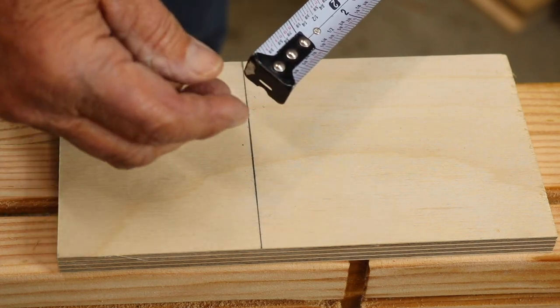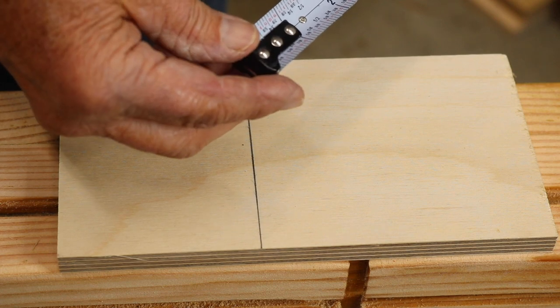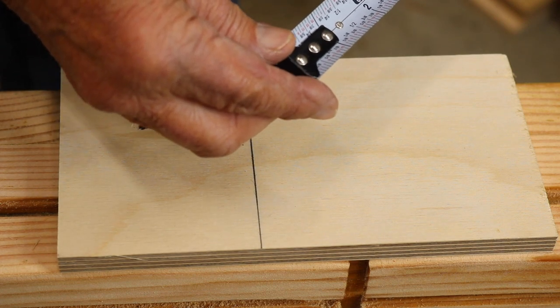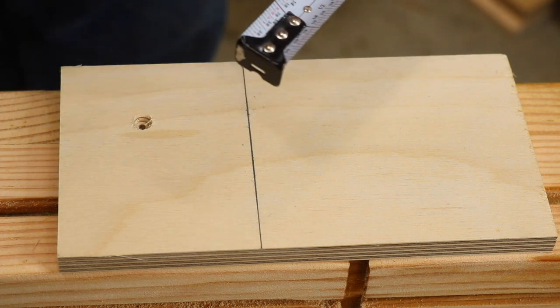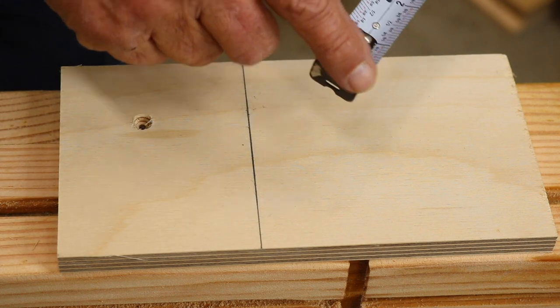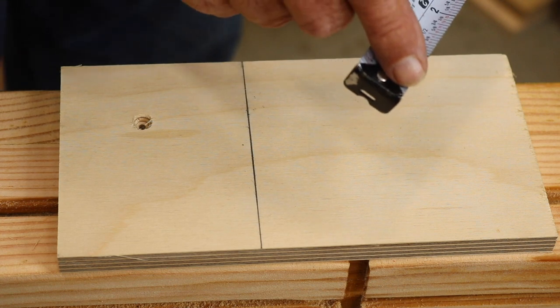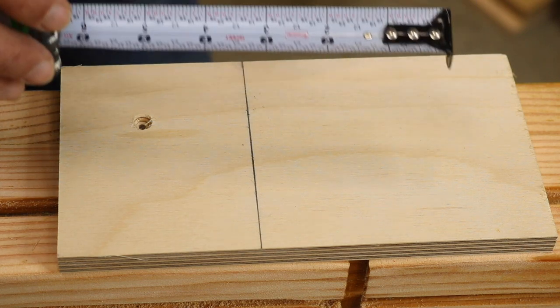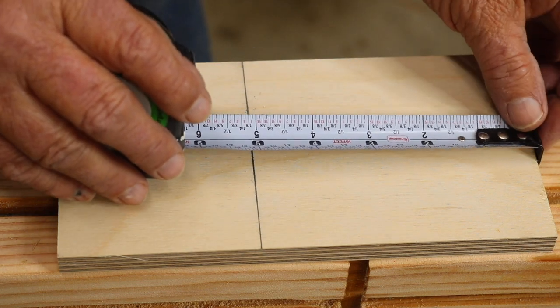It actually slides back and forth one-sixteenth of an inch. This actual rule here is missing the last one-sixteenth. This hook is one-sixteenth wide.